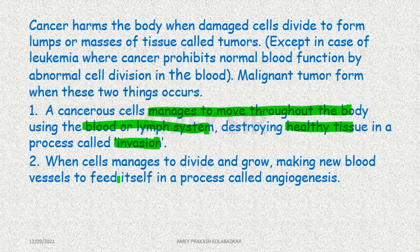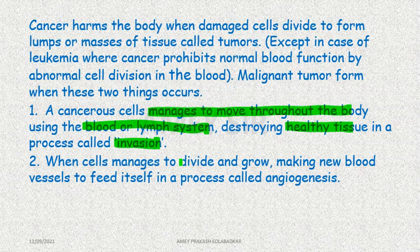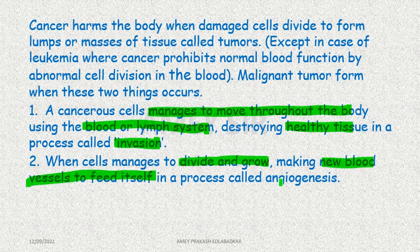The word cancer means crab — it slowly, gradually grabs and eats its prey, and similarly cancer eats the human. When cells manage to divide, grow, and even form new blood vessels for themselves — that is angiogenesis — this is how cancer progresses.